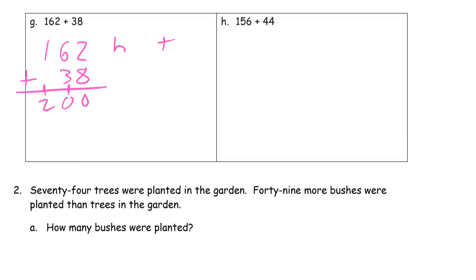H, T, O. 162 is 1 hundred, 6 tens, and 2 ones. And then 38 is 3 tens and 8 ones, which of course makes a 10. And now we have 10 tens, and that makes 100, and now we have 2 hundreds, we have 0 tens and 0 ones.